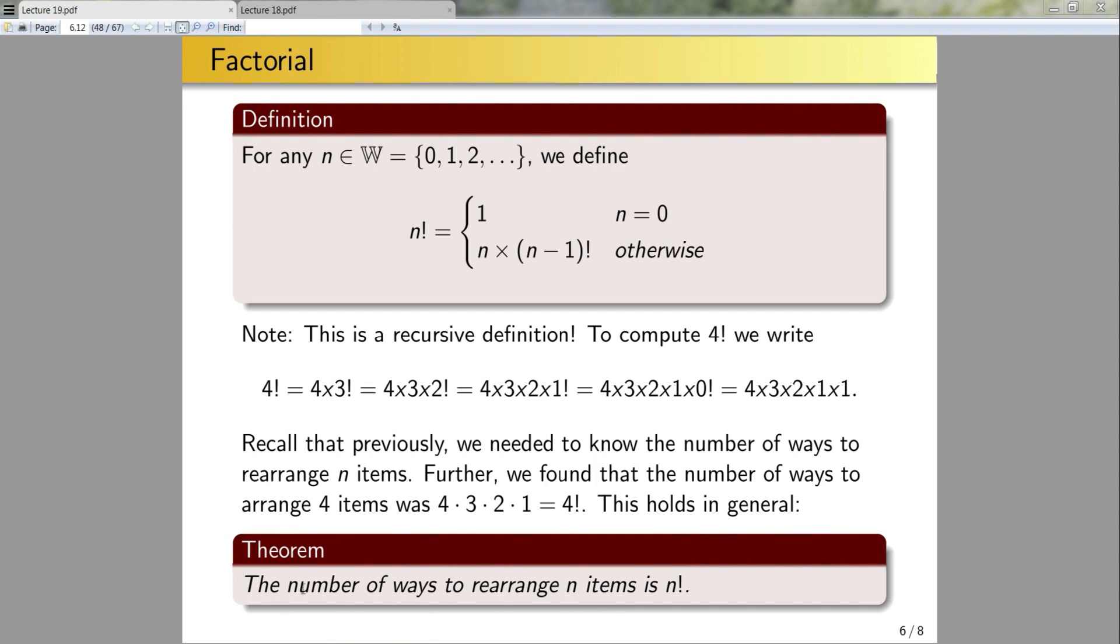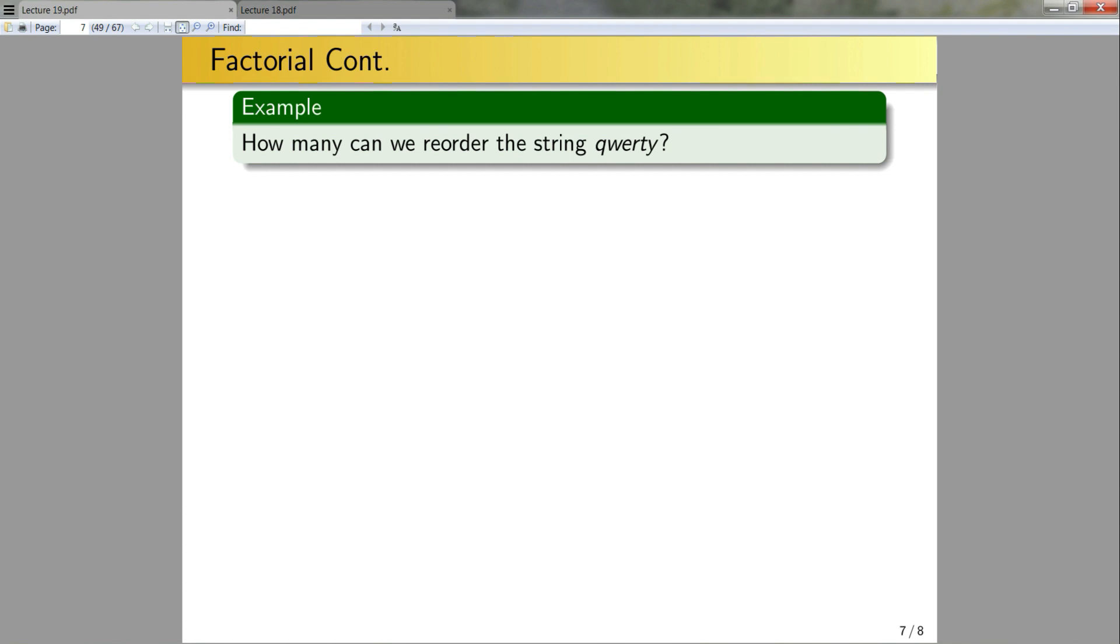The argument that you would use to prove this is basically start with a list of n items. The number of ways that you can select the first item is n. The number of ways you can select the next one is n minus 1, and you can do that until you get down to 1. You can also use an inductive argument if you want to be a bit more formal. Nevertheless, we're not going to prove this. Let's start using it. How many ways can I reorder this string Q, W, E, R, T, Y?